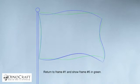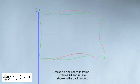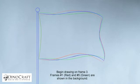Return to frame number 1 and show frame number 5 in green. Create a blank space in frame 3. Frames number 1 and number 5 are shown in the background. Begin drawing on frame 3. Frames 1 and 5 are shown in the background.